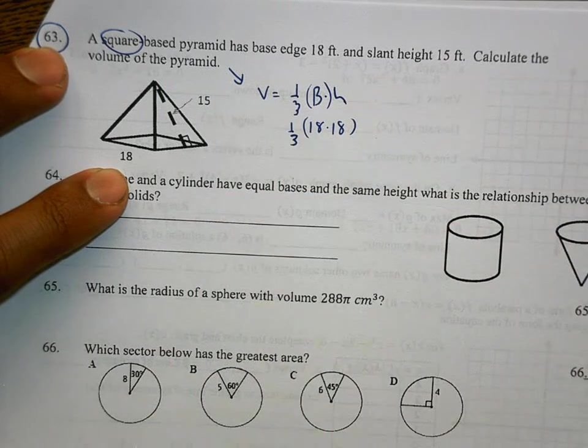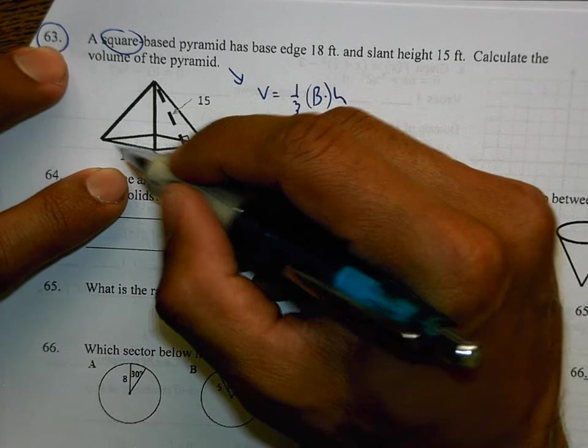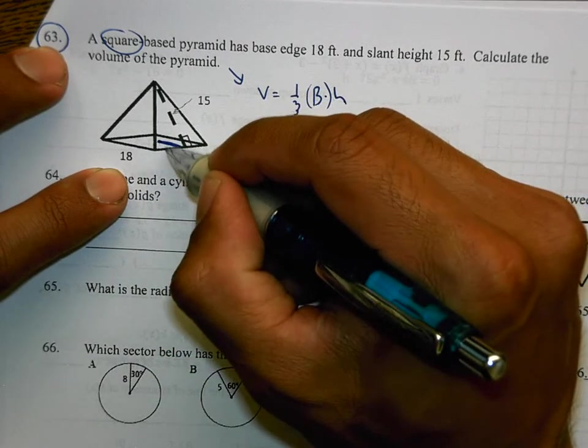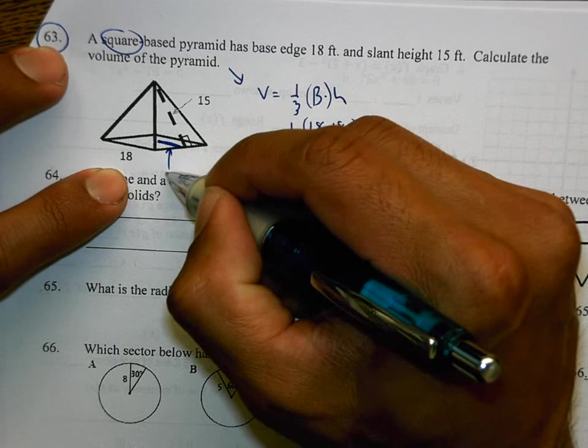It says square base, but they don't give you the perpendicular height. They give you the slant height. They're hoping you're just going to plug in the 15 and make a mistake. But if you know that this thing is 18, then that means the distance from here to the exact middle would be a distance of 9 units.